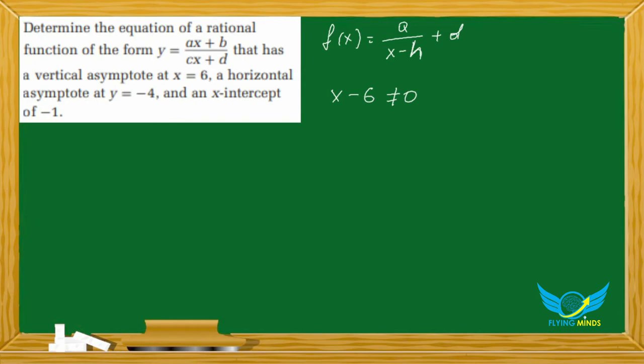6 is not a permissible value. Vertical asymptotes are not permissible values for rational functions. So from here, c equals 1 and d equals 6. So we have ax plus b over x minus 6, and now we need to transform this.